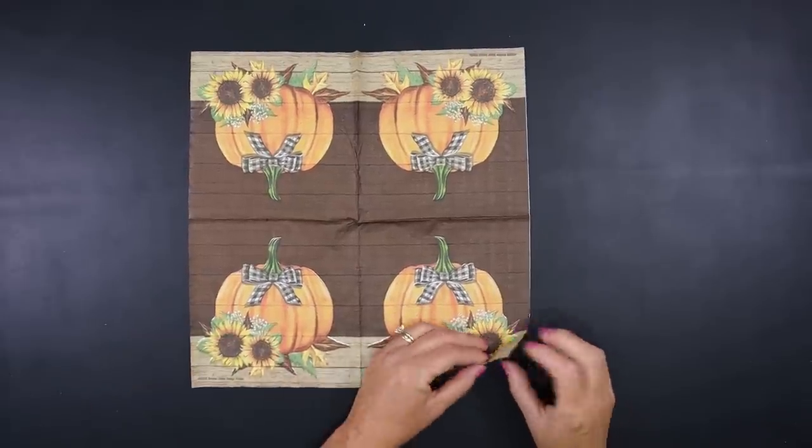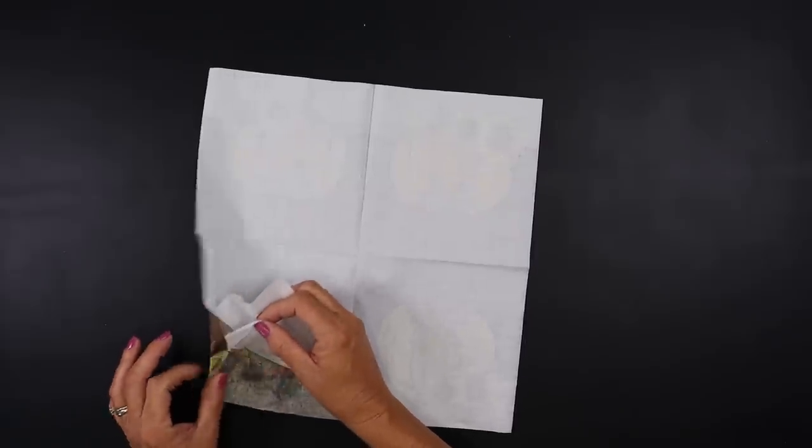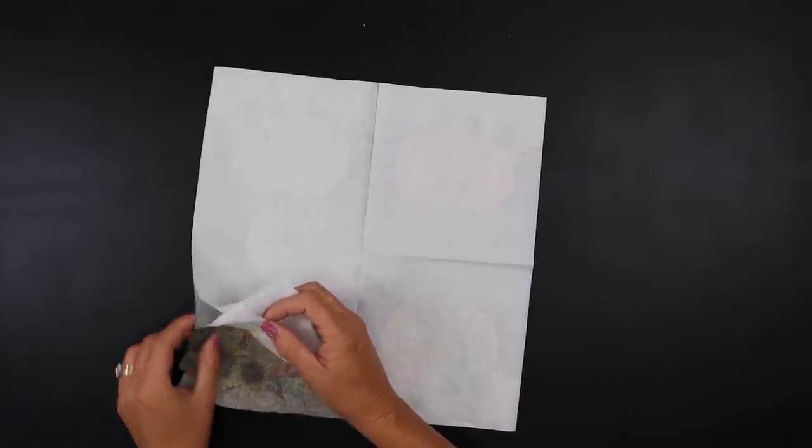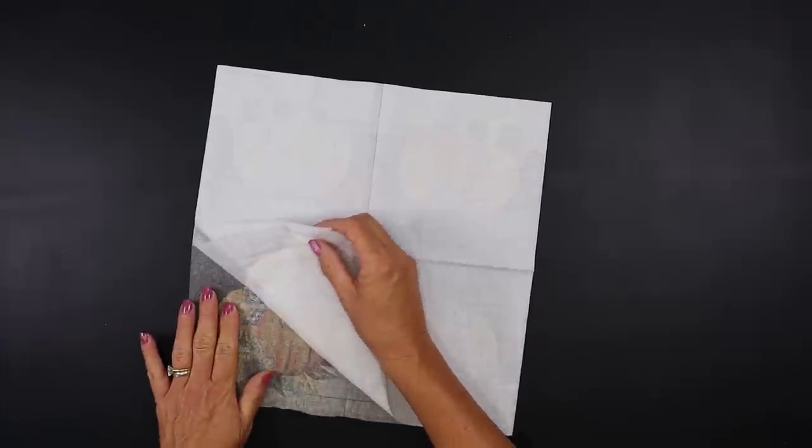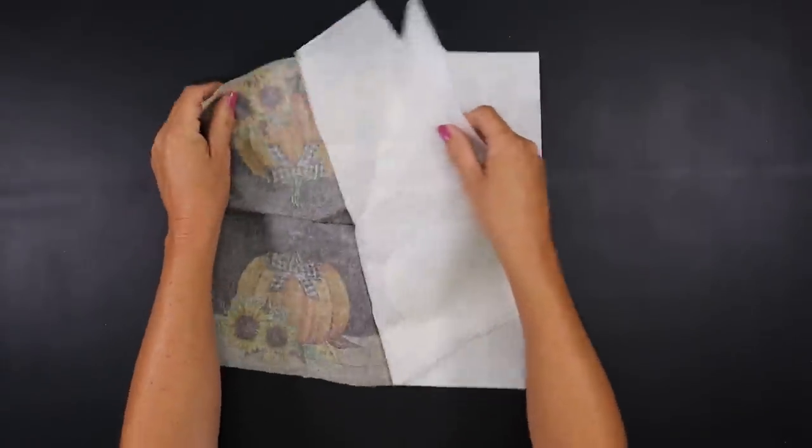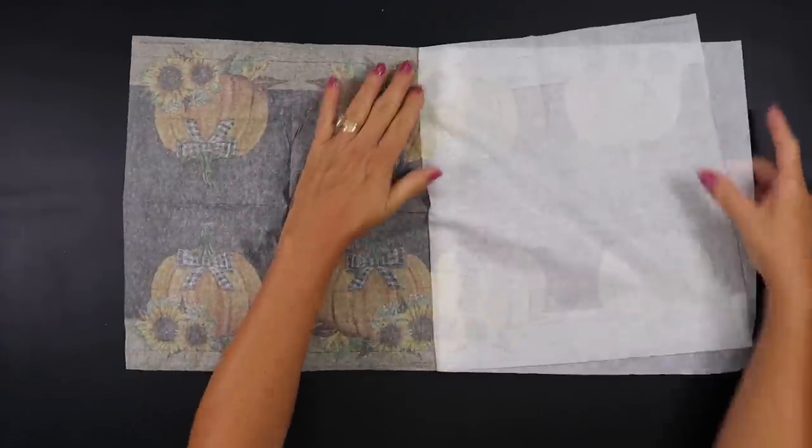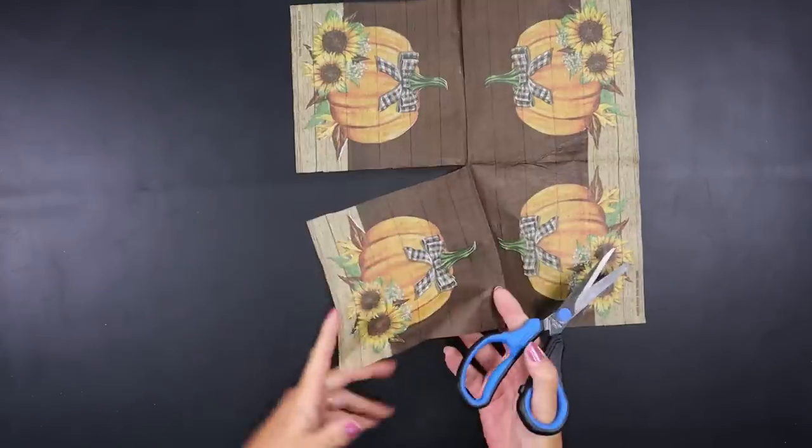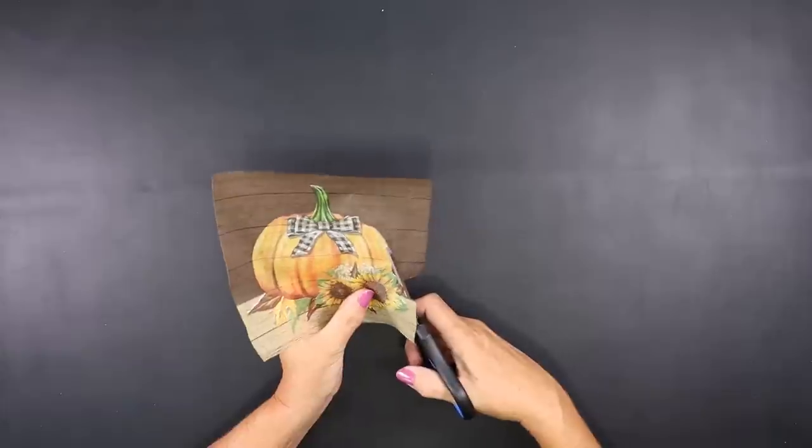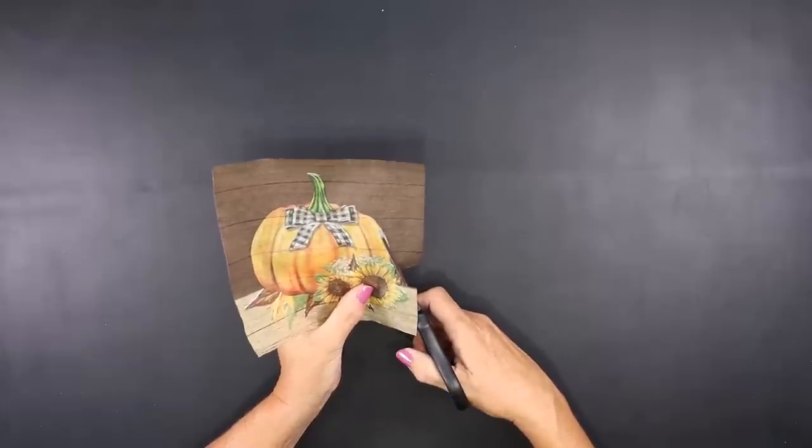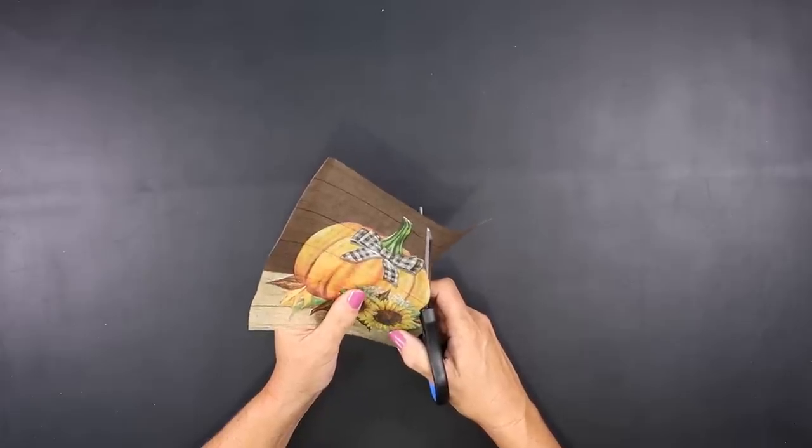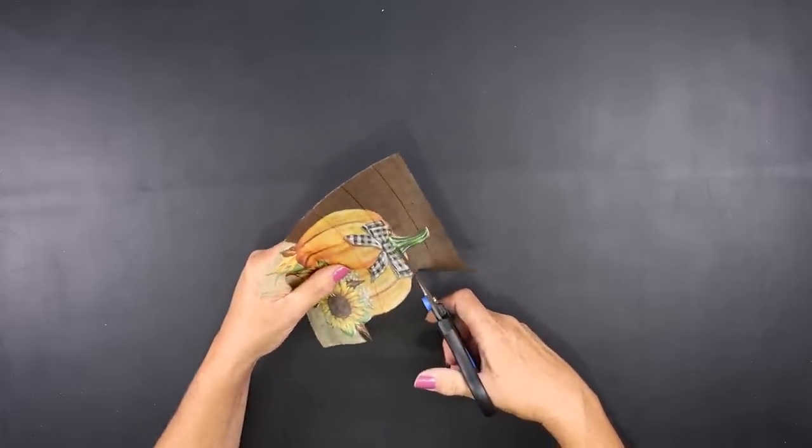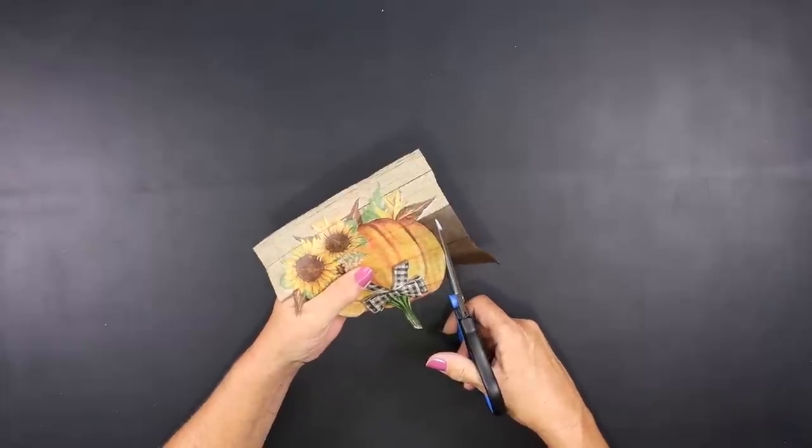I'm using a napkin from Hobby Lobby. I'm going to remove the back two layers so I'm only left with the front layer and I only need one section of this napkin. So once I cut that out I'm also going to cut out the image. I'm going to leave the bottom portion where the table is that the pumpkin's sitting on and trim as close as I can around the pumpkin itself.